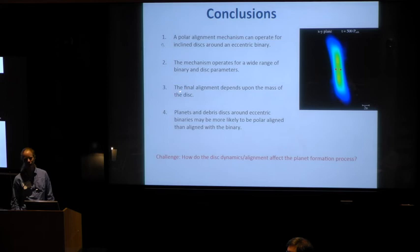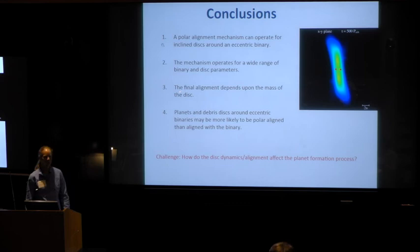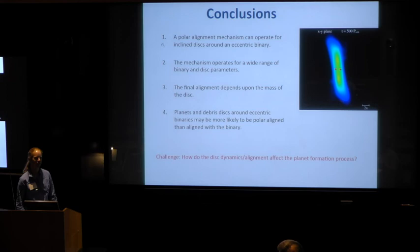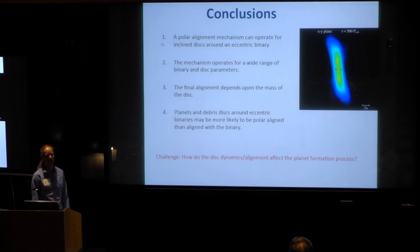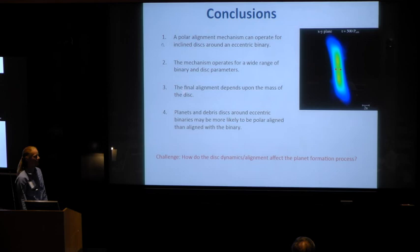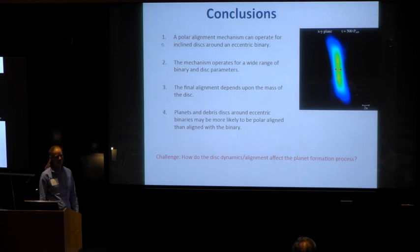Q: Does this make any predictions for circumbinary planets in transit? A: They should be there — someone needs to find them. Obviously it's more difficult because they're not going to transit every orbit. But especially now as we're finding polar-aligned disks, I think they should be there. You're also making predictions for how they should be aligned with the rest of the system.